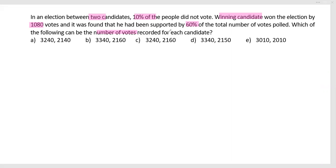So out of the votes polled, this is recorded. I can see that the winning candidate and the loser are getting 60% and 40% of the votes polled respectively. So their gap is 20%. 20% of the votes polled equals 1080.